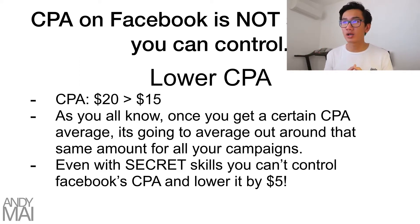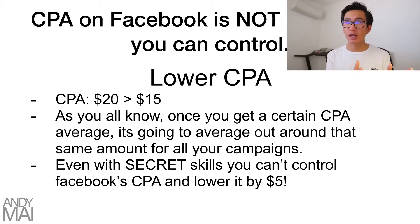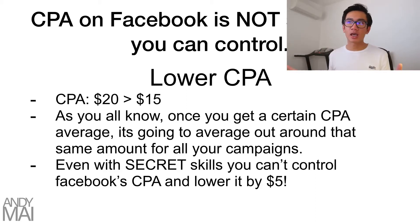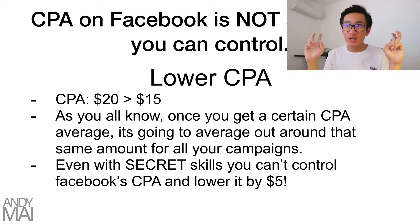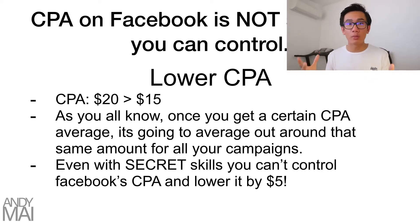You literally can't control it — you're at the mercy of Facebook's results, randomness, and algorithm. So you can't literally lower your CPA. Once you obtain a certain average CPA, it's going to average out around the same CPA across all your campaigns. Even with advanced skills, you can't control Facebook's CPA to drop by $5. It's impossible.